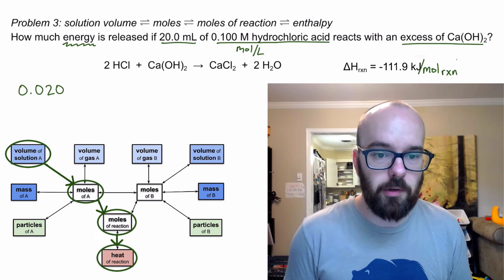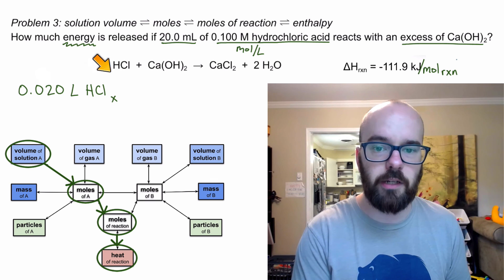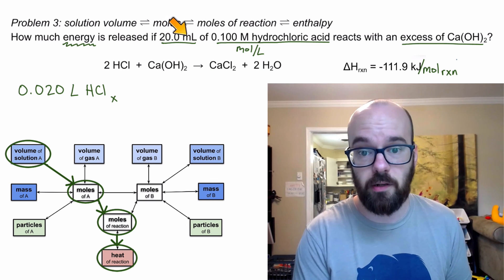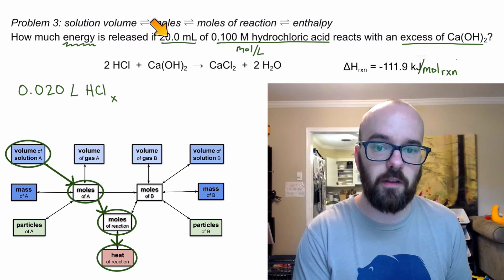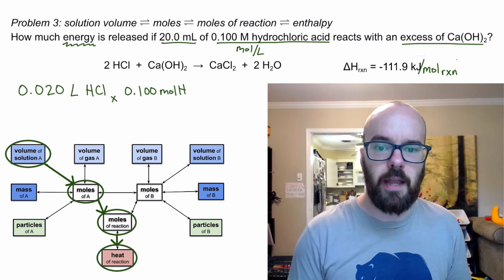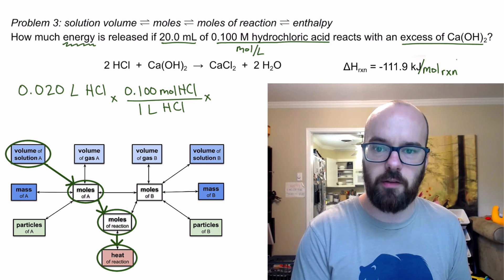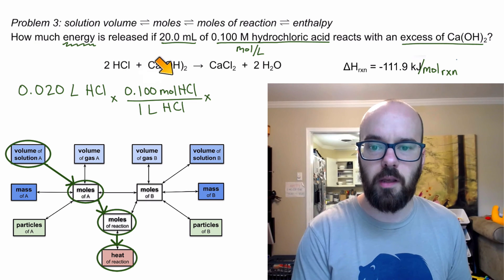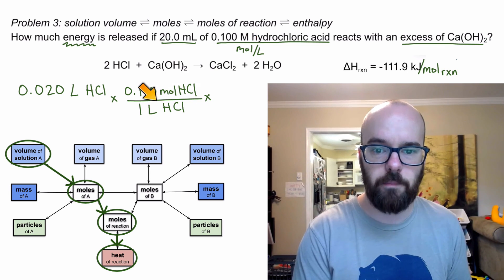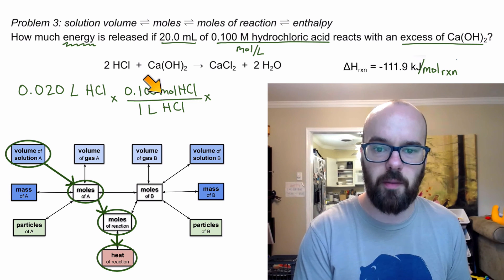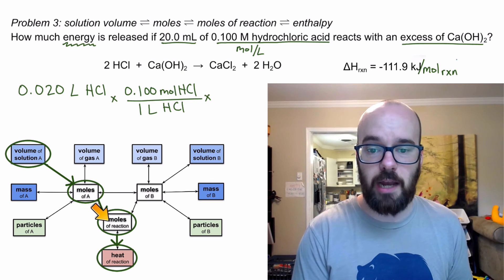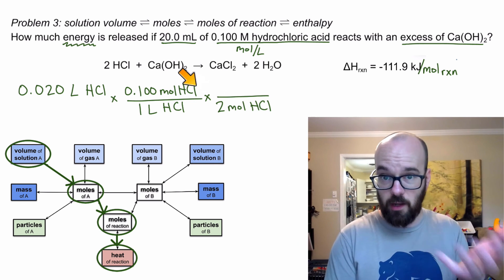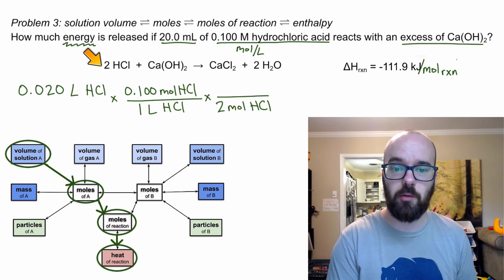Setting up the stoichiometry: 0.020 liters — that's 20 milliliters converted by moving the decimal three places left. Next, convert to moles of HCl using molarity as my conversion factor: 0.1 moles per liter. The number in my conversion factor always goes with the first unit, so 0.1 stays with moles and the denominator is just one liter. For the moles-of-reaction conversion, I use the balanced equation coefficient for HCl, which is two, against one mole of reaction.